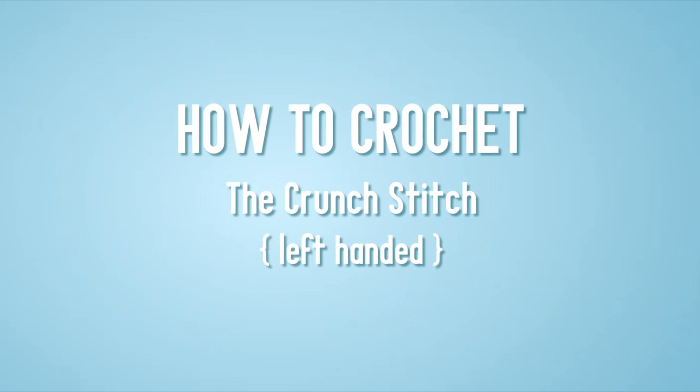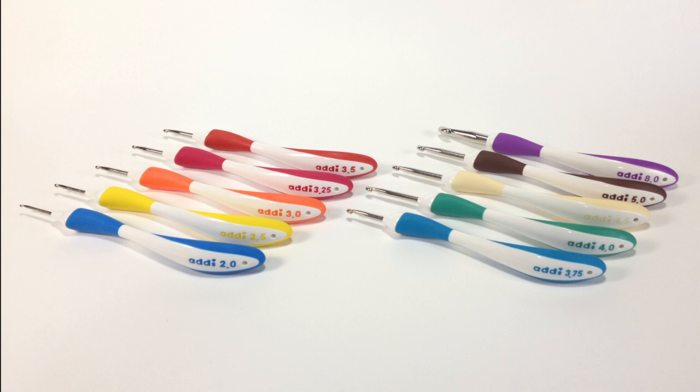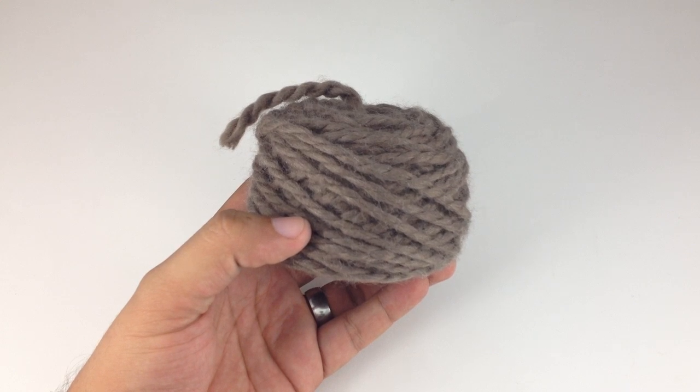How to crochet the crunch stitch, left-handed. For this stitch you will need a crochet hook. Special thanks to our sponsors Cassell for providing today's hooks. Today we are using their Addi Swing Ergonomic Crochet Hooks in size USJ10, and a ball of yarn.